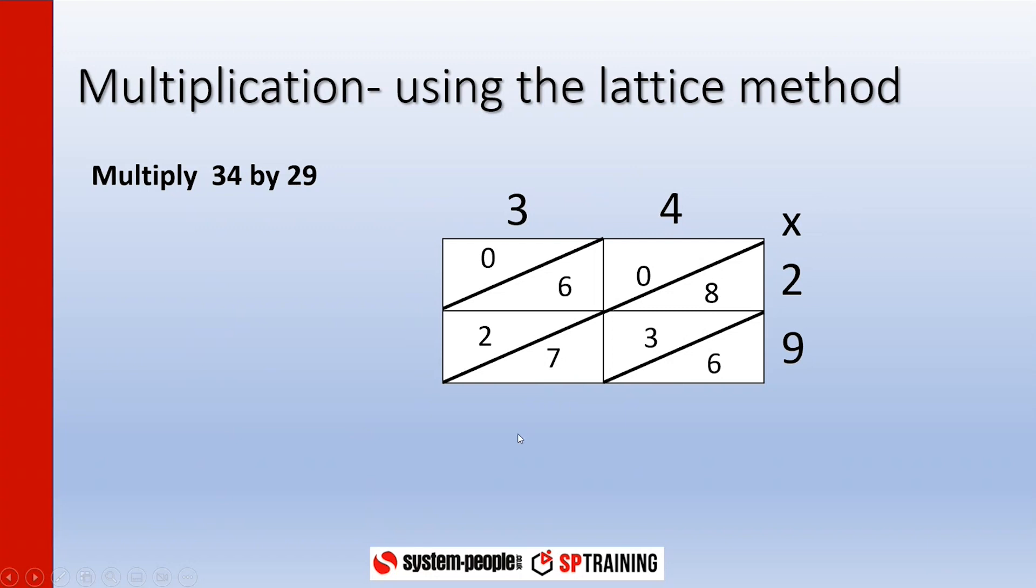And then we've got our answers in there. Now what we do next is important: we're going to add up diagonally. So in this diagonal we have got 6. In this diagonal here we've got 8, 3, and 7 which make 18, so I'll put 8 down here and I'm carrying 1 over into the next diagonal. So in this diagonal I have got 6, 2, and 1 which make 9. And in this one I've got 0 so I don't need to bother with that.